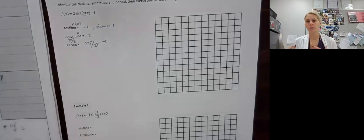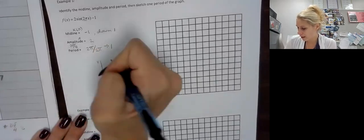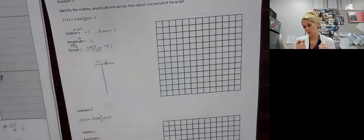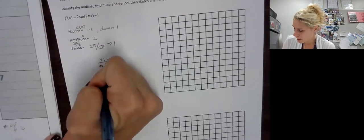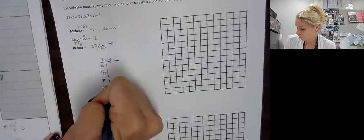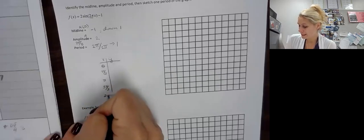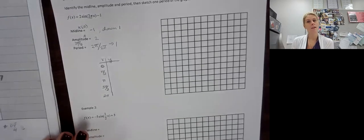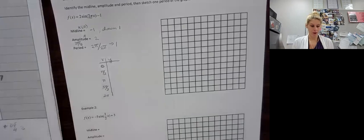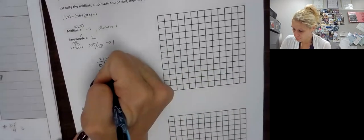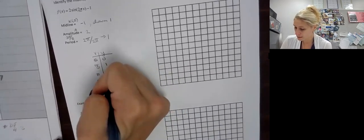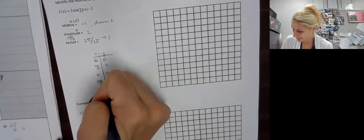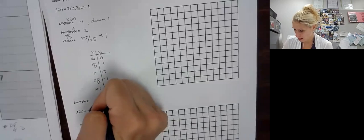We're going to relate this to transformations, so we always put our parent function first. We're doing sine, and X will always start with 0, pi over 2, pi, 3 pi over 2, and 2 pi — because that is a full cycle, or period, for the parent function. For sine: when X is 0, Y is 0; when X is pi over 2, Y is 1; when X is pi, Y is 0; when X is 3 pi over 2, Y is negative 1; and at 2 pi, Y is 0.